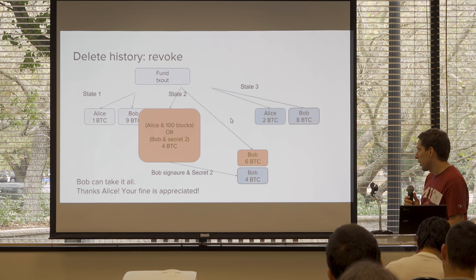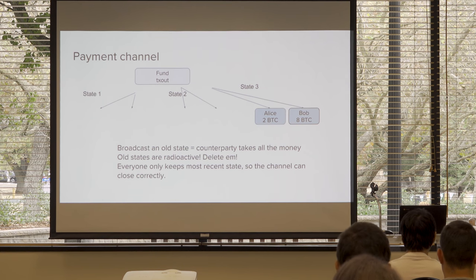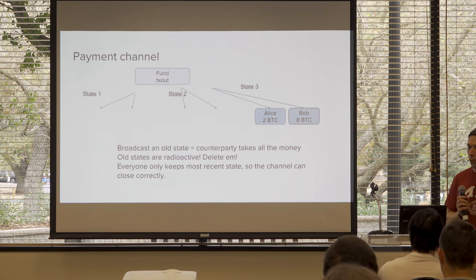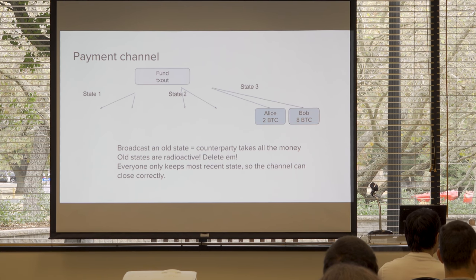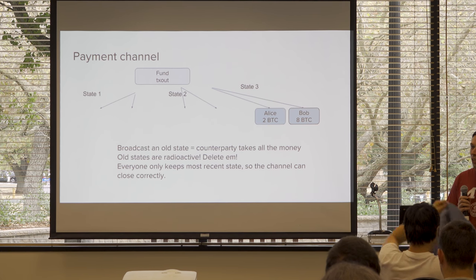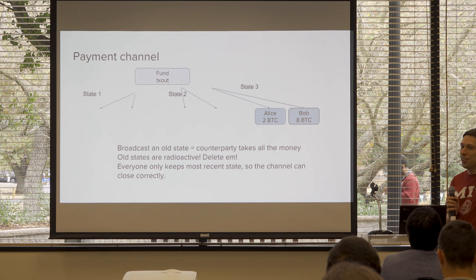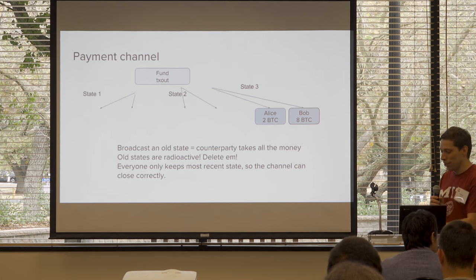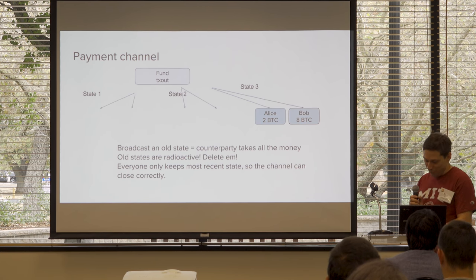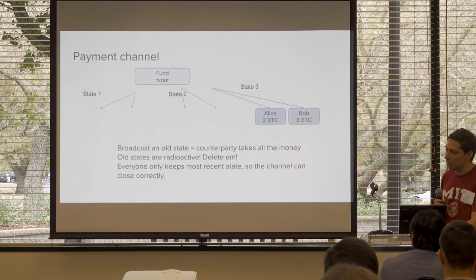That's the basic mechanism for revocation: if you broadcast an old state, your counterparty takes all the money in the channel. Old states are essentially radioactive and you should delete them. If you accidentally broadcast state two when you've already signed off on state three, it's automatic — Bob's software immediately broadcasts the justice transaction taking all the money. Maybe you can go to Bob and say sorry, I broadcast the wrong thing, you should only have eight and I should have two but you got all ten — can you give me the two back? But probably he won't.